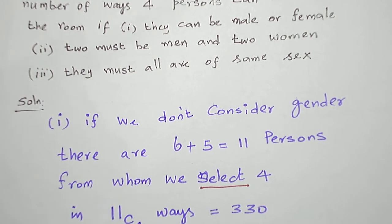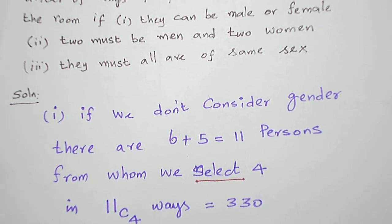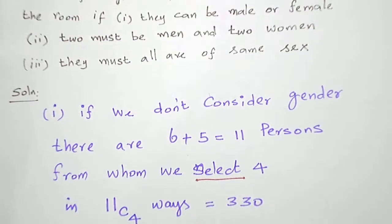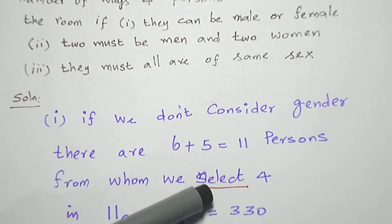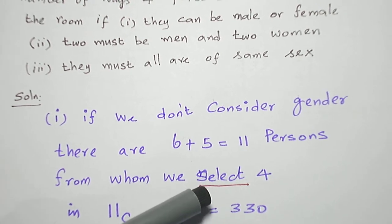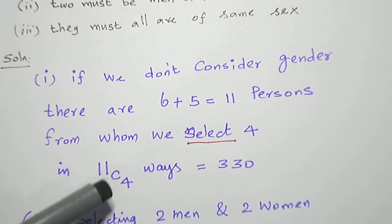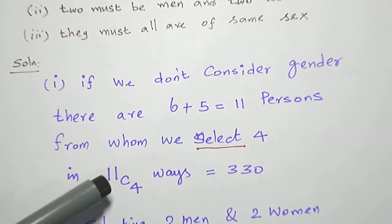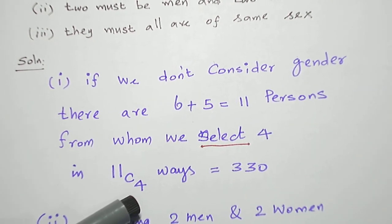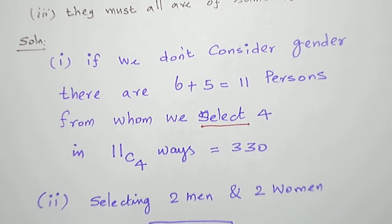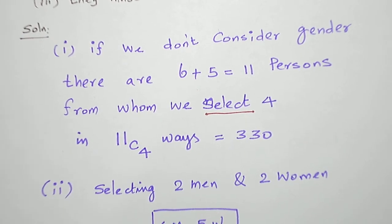Out of these eleven persons we have to select four. Drawing is nothing but selection. Whenever we have selection, we apply combinations. So four from eleven can be done in 11C4 ways. When we apply the formula for 11C4, it is 330.